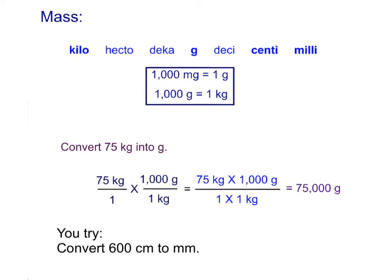Now convert 75 kilograms into grams. We start with what we know. We write down 75 kilograms. That's the same as 75 kilograms over 1, divided by 1. We're going to multiply by our conversion factor, which is going to be 1,000 grams equals a kilogram. We want to put the kilograms on the bottom so that the units will cancel out. I can rewrite that. I get 75,000 grams. That's the only unit left.